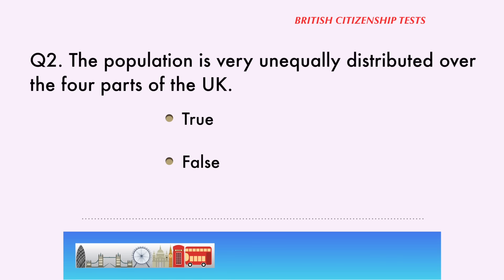Question 2. The population is very unequally distributed over the four parts of the UK. True, false. The correct answer is... True.